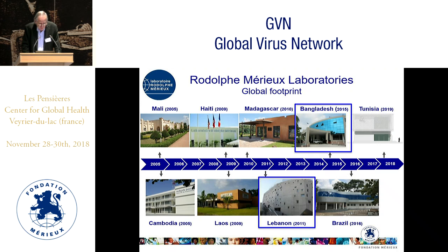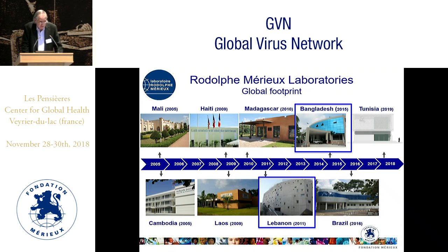This picture shows the Rodolphe Milieu Laboratories — the research and training platforms that the Foundation has literally built in various countries starting from 2005. Coming back to the Syrian and Myanmar issues, we have a laboratory platform in Bangladesh in the same province where the Rohingya refugees landed. In Lebanon, we have a laboratory which is 20 kilometers from the heart of the refugee camps. So we are very well positioned to study and perform operational activities with these populations.